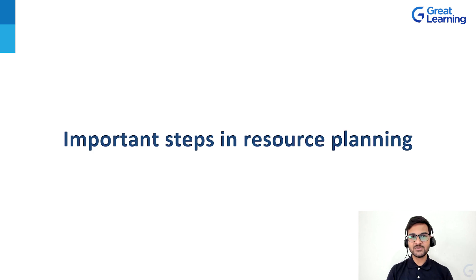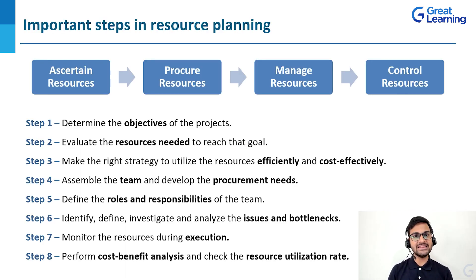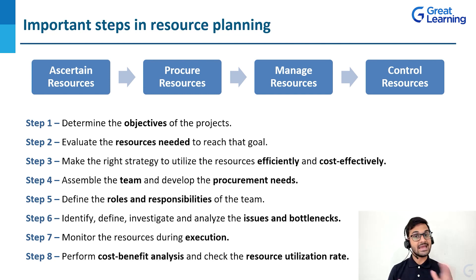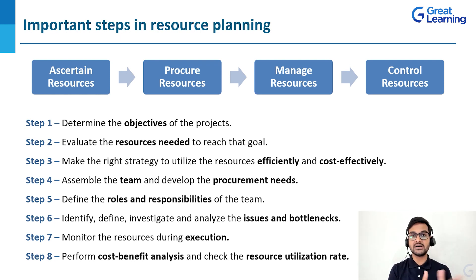Now let's see what are some of the important steps in resource planning. Broadly speaking, there are four steps. Step one is ascertain resources — you need to know what resources are required to perform that particular project. Step two is procure resources — as seen in the IT industry example, the project manager understands the client's requirement, gets to know the resource demand, and escalates to the resource manager. Step three is manage the resources. Step four is control the resources based on how far we are from achieving our goals, whether we are over-using or under-using resources.